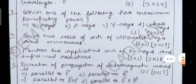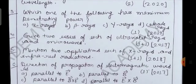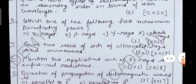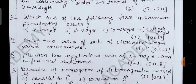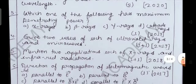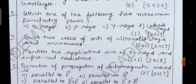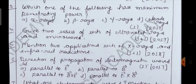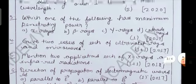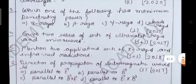Now next, which one of the following has maximum penetrating power? So to crack this question, you would have to know what is penetrating power. Option a is alpha rays, option b beta rays, option c gamma rays and option d cathode rays. Asked in 2019 and this is one of your another objective question.